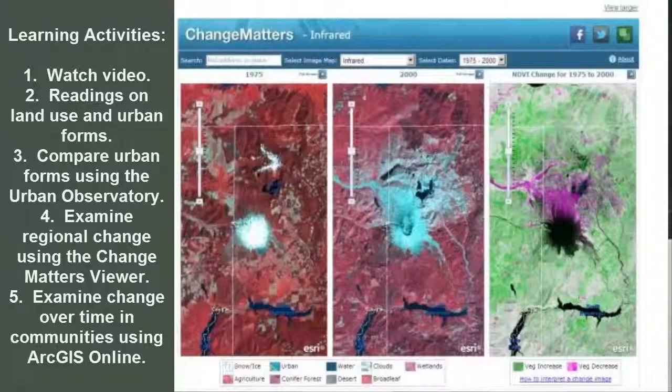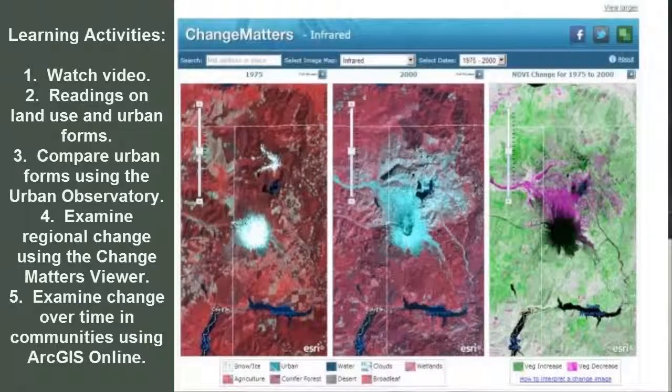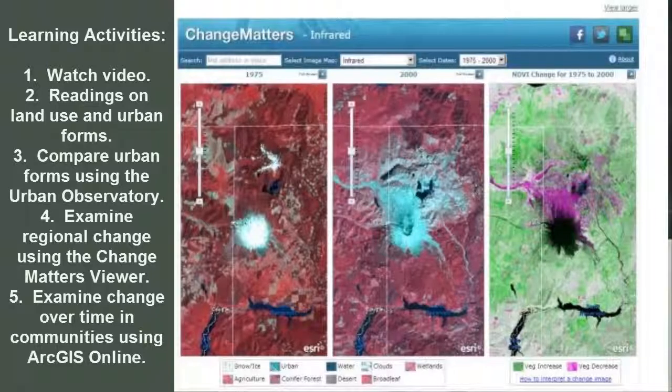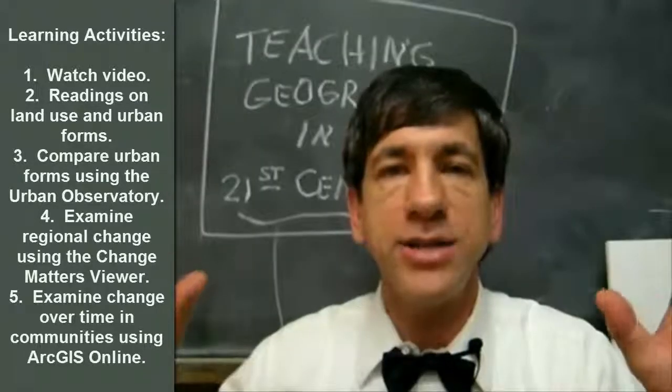We're going to examine regional change using the Change Matters Viewer. Now this is a viewer that allows us to look at Landsat satellite images from the 1970s to the present. Looking at changes from natural changes or natural forces as well as human-caused forces.